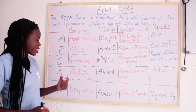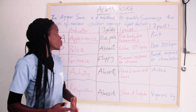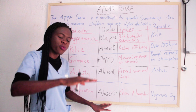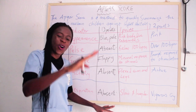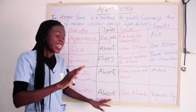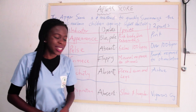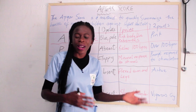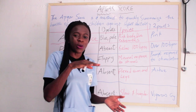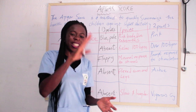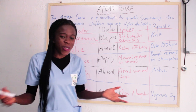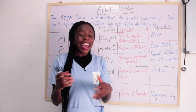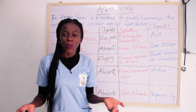Then the last component is R — Respiration. If there is no respiration at all — you are not seeing the movement of the chest up and down — you give the baby zero points. If the respiration is slow and irregular, breathing and stopping intermittently, you give the baby one point. But if you hear a vigorous cry, you give the baby two points. When you hear a vigorous cry from that baby, it means the baby's respiratory system is very, very active.